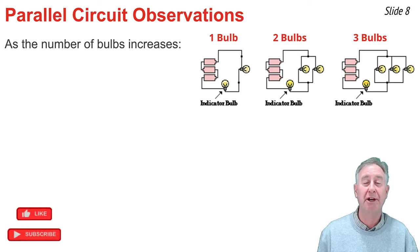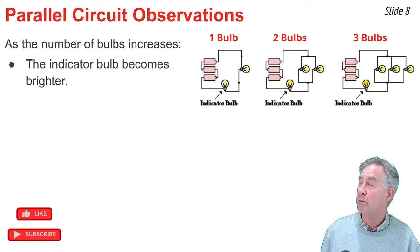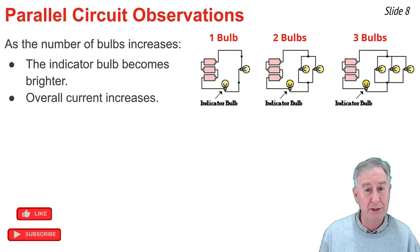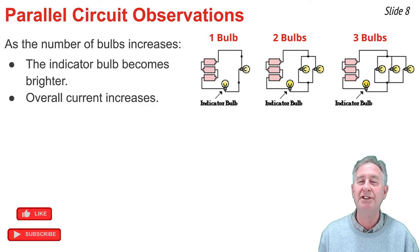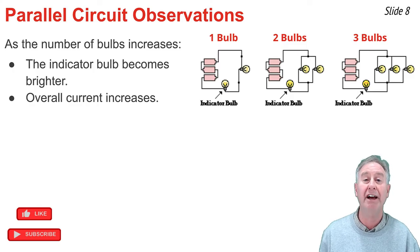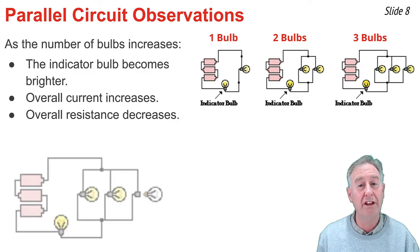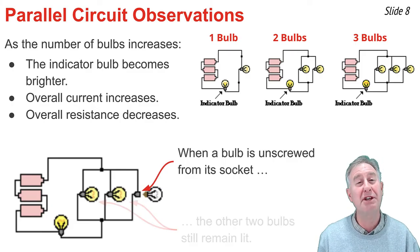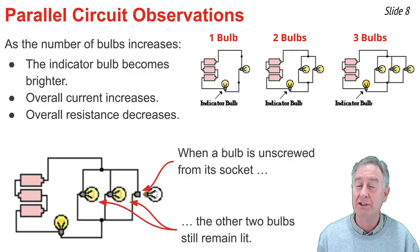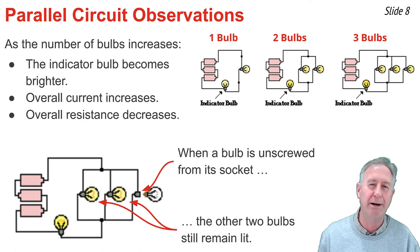When the same procedure is done with a parallel arrangement of light bulbs, we often use an indicator bulb to measure the current outside the branches. We observe that as you increase the number of light bulbs arranged in parallel, the brightness of that indicator bulb increases, telling us that the overall current is also increasing. This leads to the claim that increasing the number of resistors in parallel decreases overall resistance and increases overall current. If we unscrew one light bulb, the other bulbs remain lit, since each light bulb is in its own separate independent branch and interrupting one branch has no effect on the others.